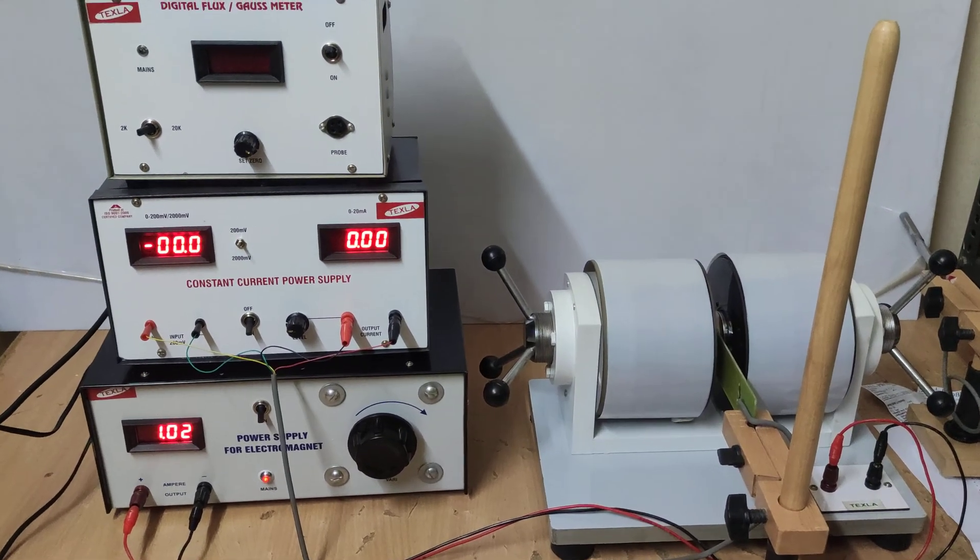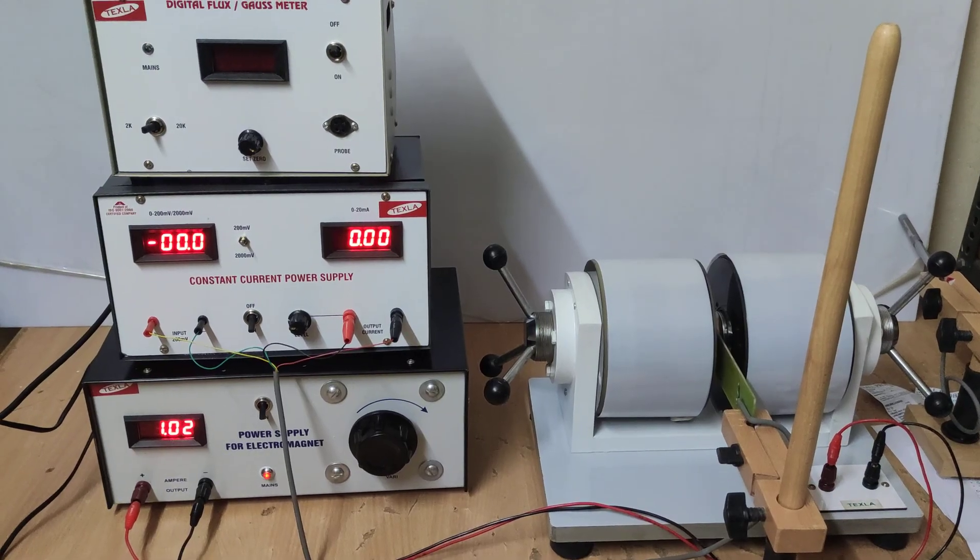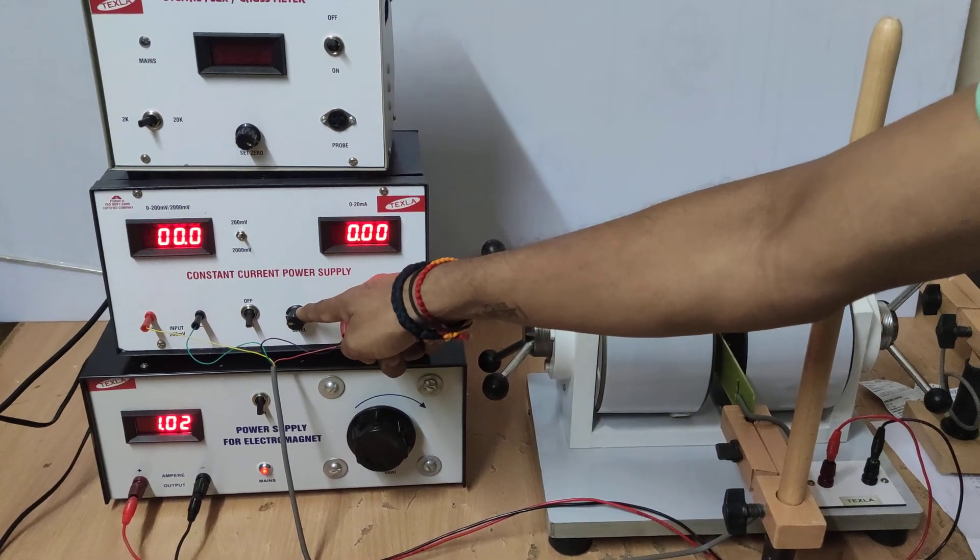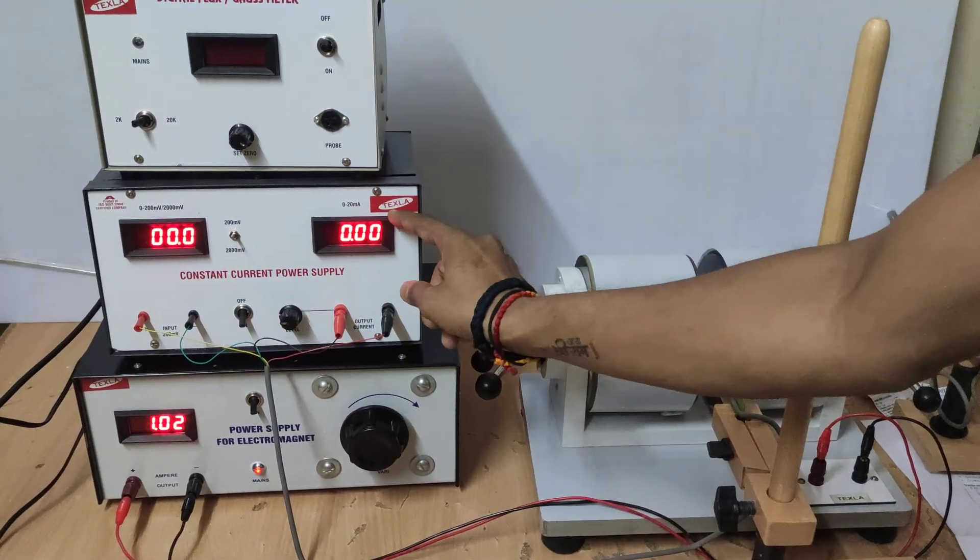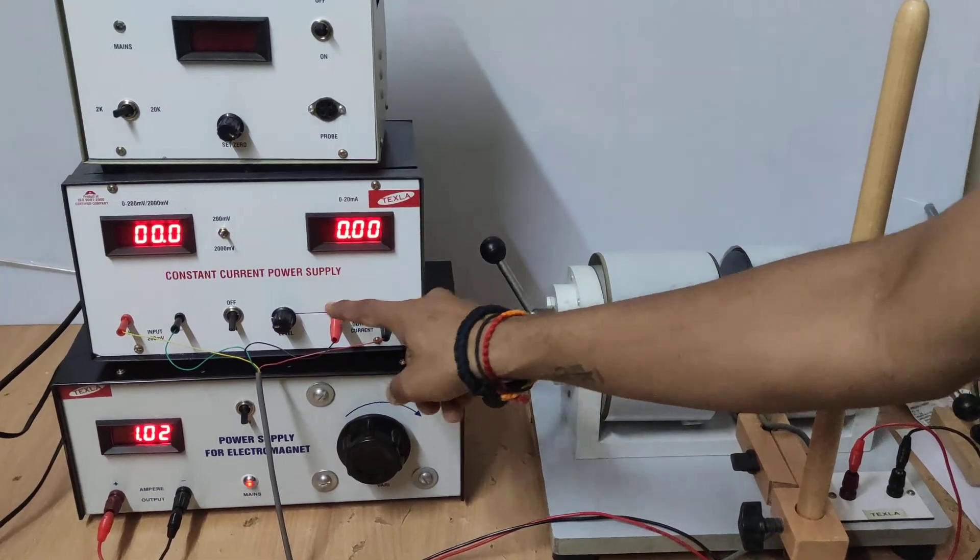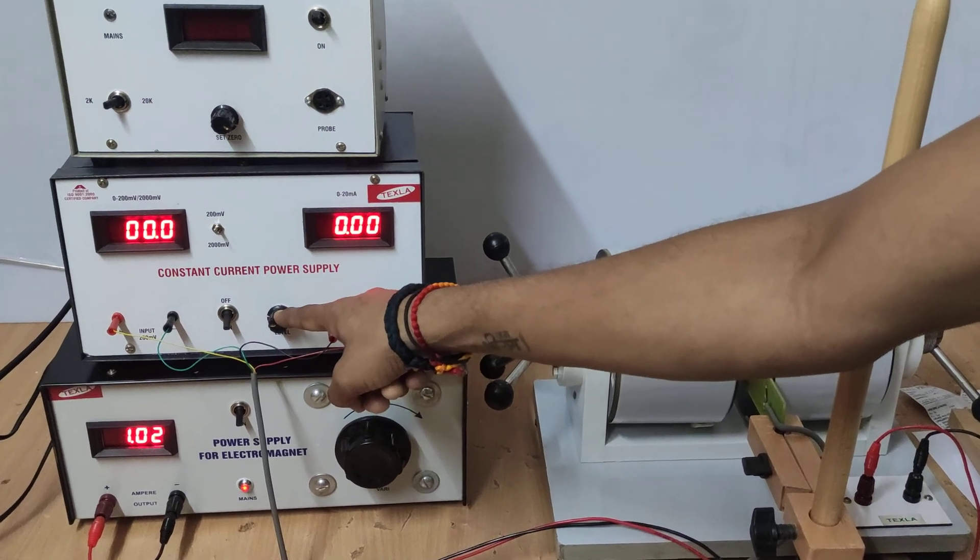You have already got the gauss probe for magnetic field for 1 ampere. From the first table of form you have to note down the gauss. Now I am varying the current, hall current, and note down the hall voltage. This will go around 3 milliampere because our power supply is 3 milliampere power supply.